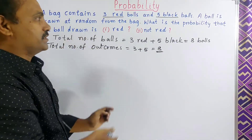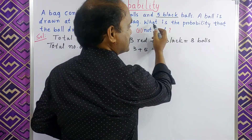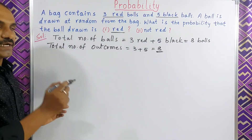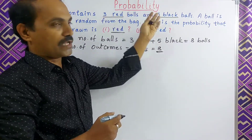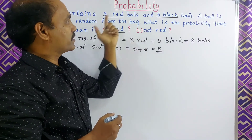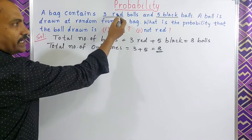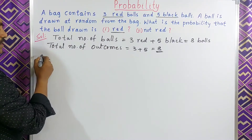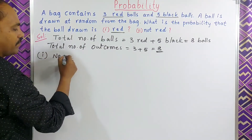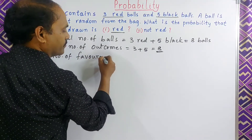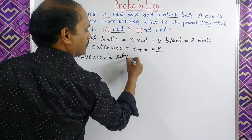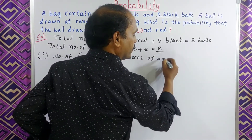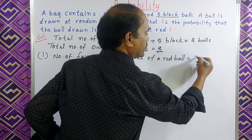This is the total number of outcomes. Now, what is he asking here — what is the probability that the ball drawn is red? First he asked red. In this overall, two color balls are there. How many balls are red? 3 red, 5 black. So 3 red balls are there. That is why the number of favorable outcomes of a red ball is equal to 3.